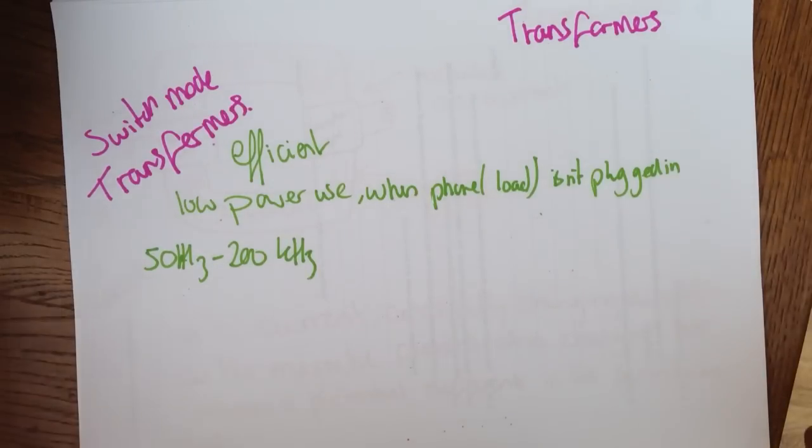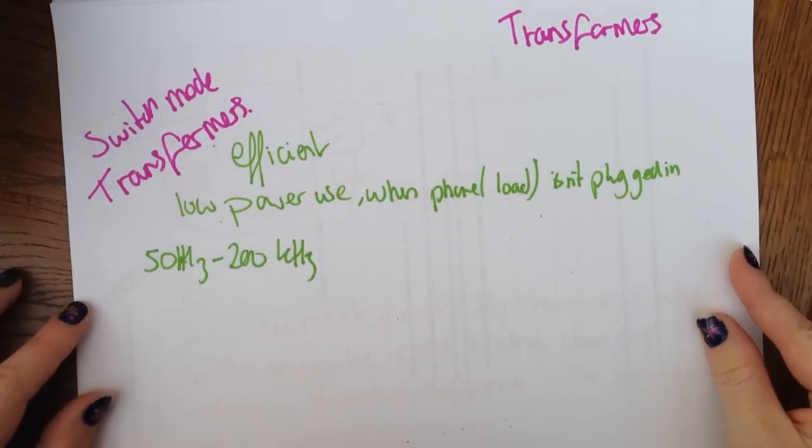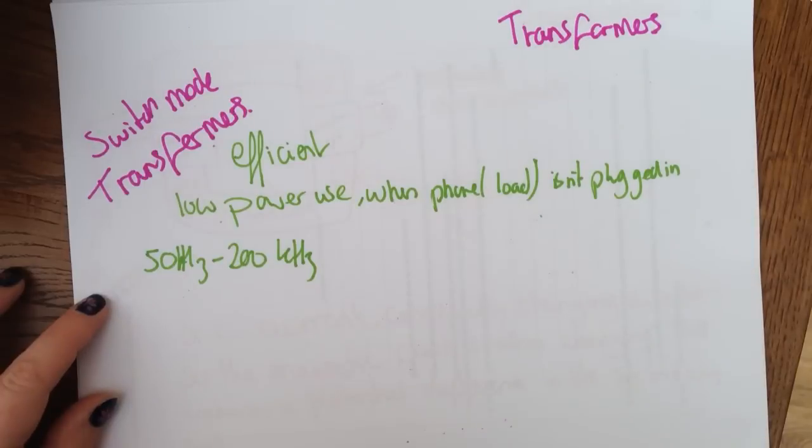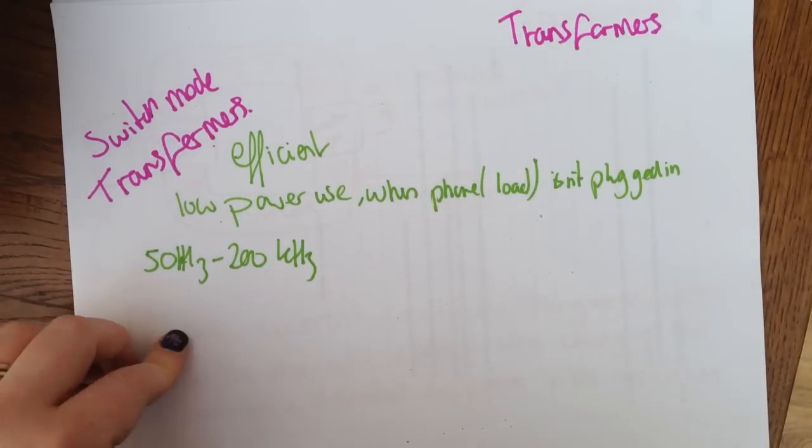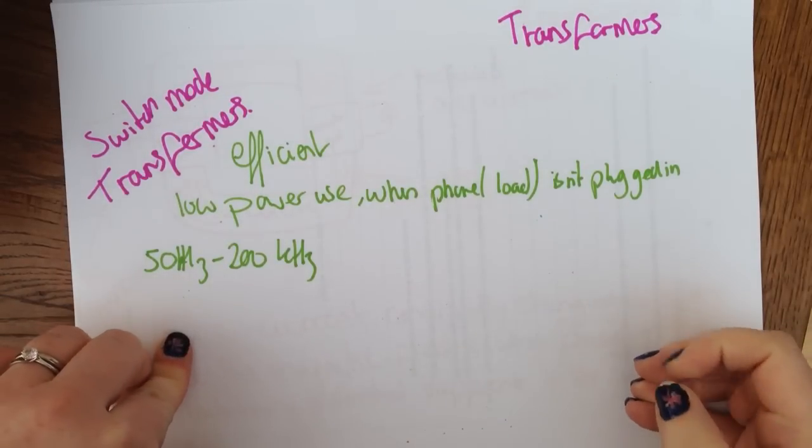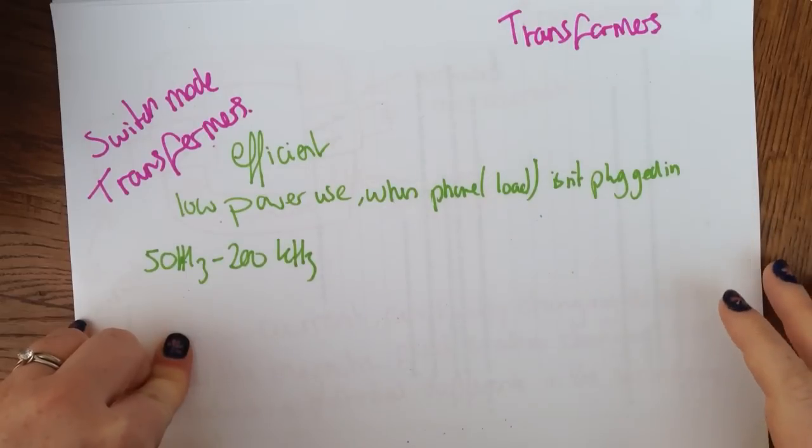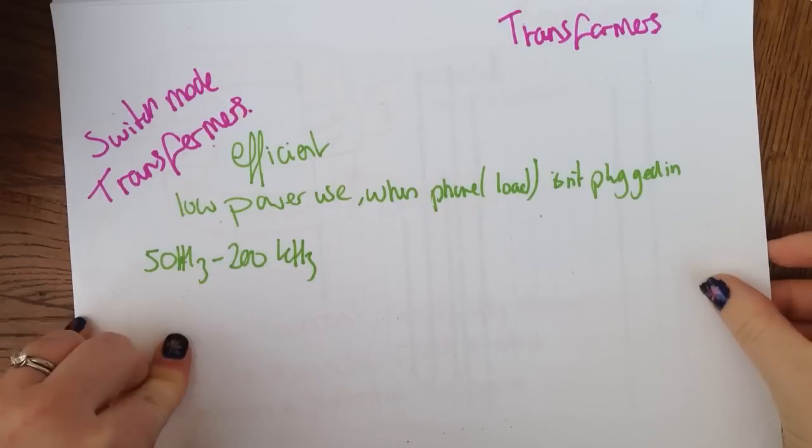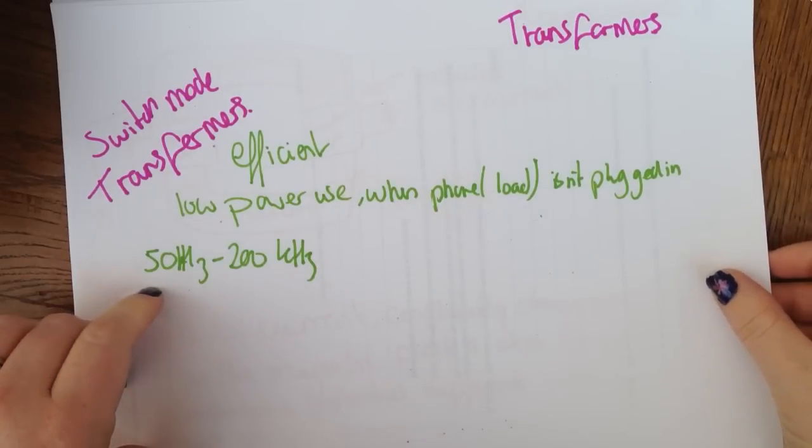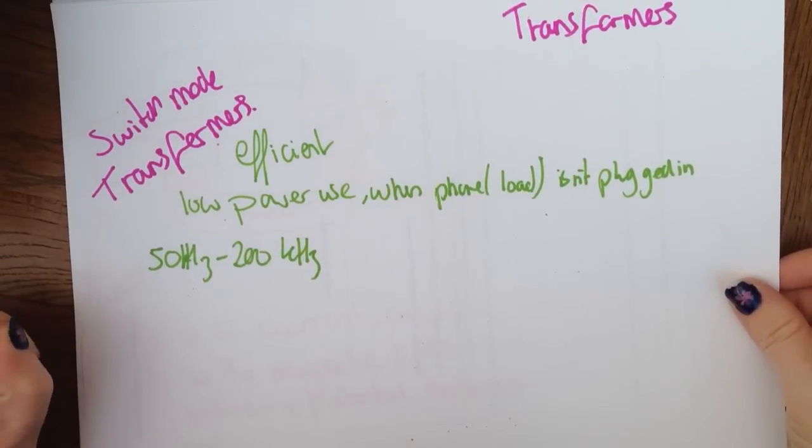Now, loads of questions I've seen them ask on this are all about transformers. One type of transformer that you need to know about is a switch mode transformer. These are very efficient, and they charge your phone or your iPad. And when they're not plugged in, they're very low power use. And they're between 50 and 200 kHz.